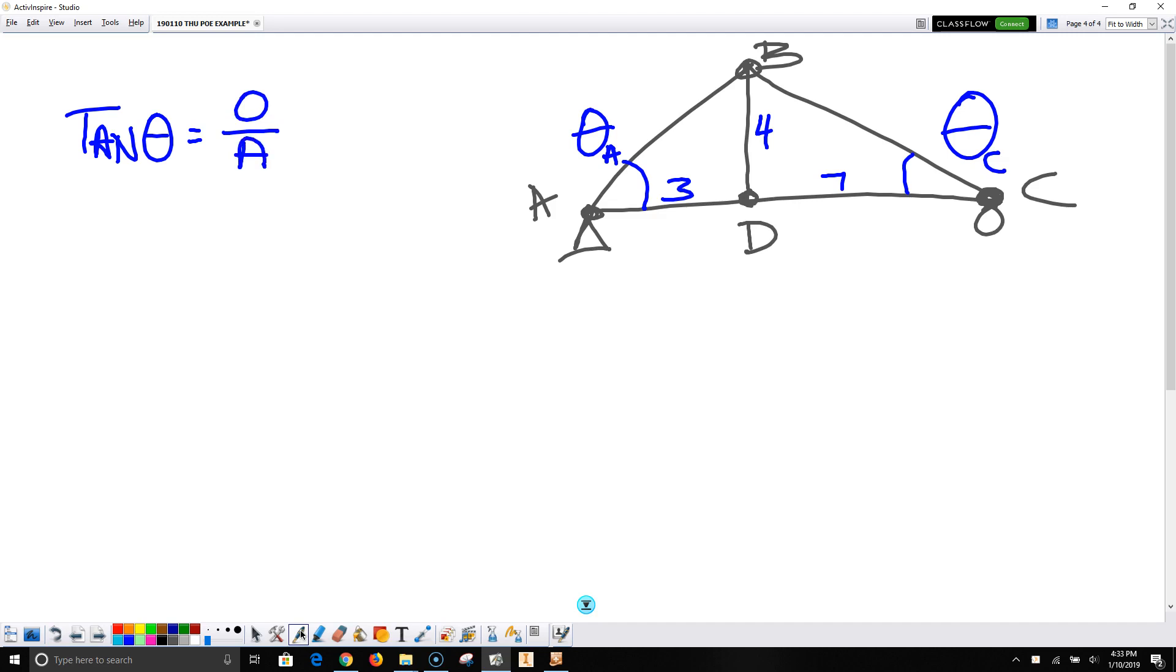Okay, so in order to find the angle, we need to take the inverse function of tan to move it to the other side. So the angle is going to be equal to tan minus 1, and that is usually the second function on your calculator, with the opposite over the adjacent. So we're going to use this formula to find angle A.